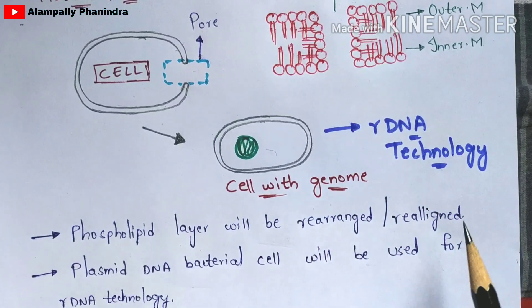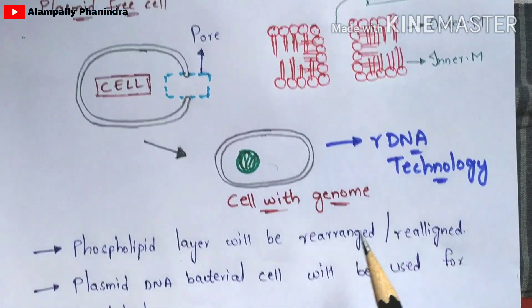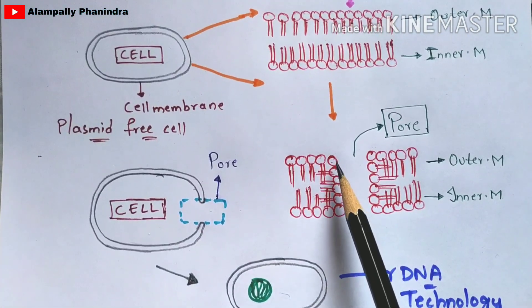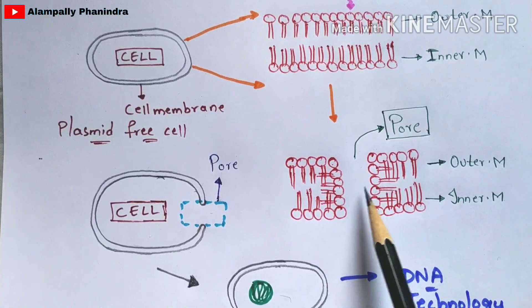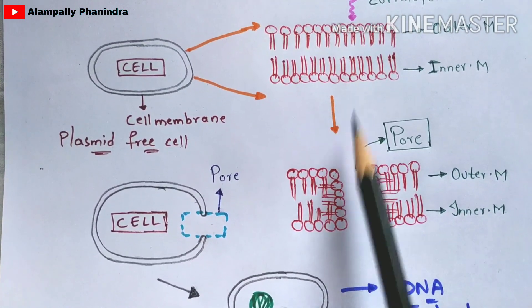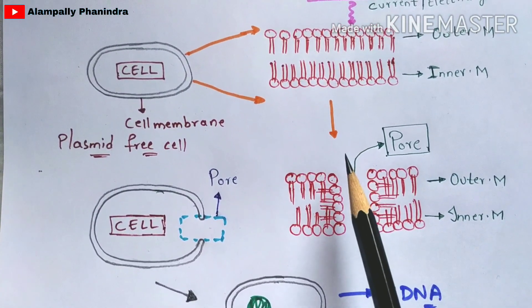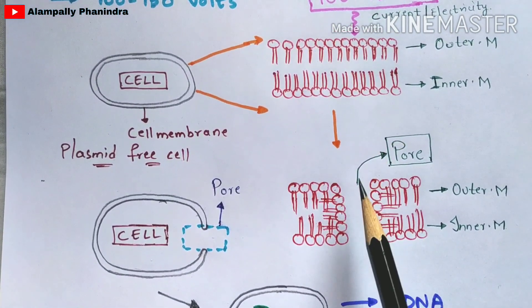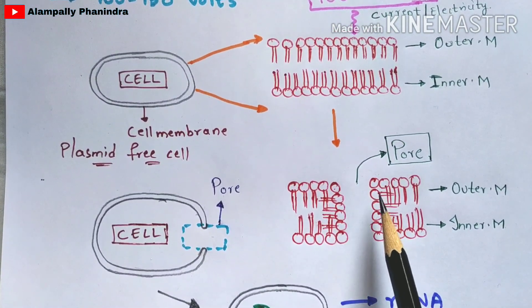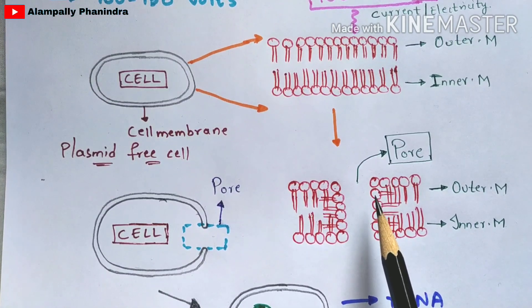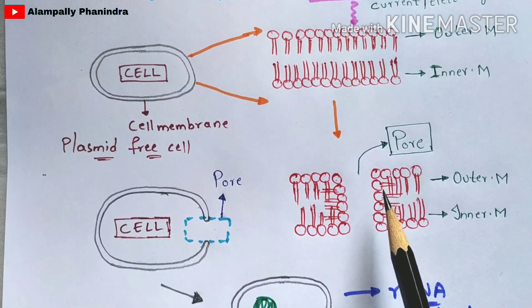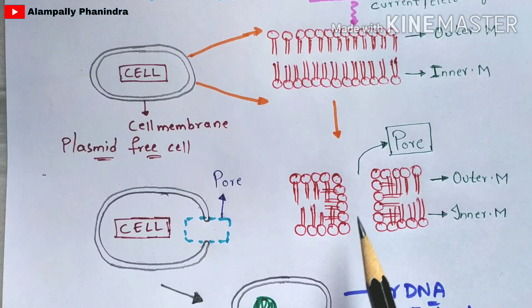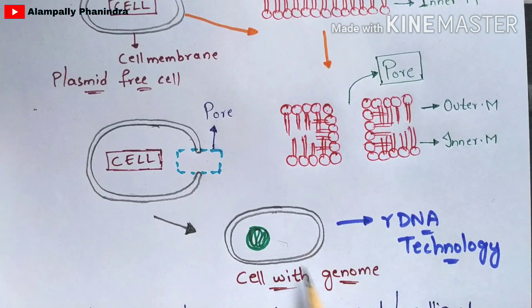The main important points to remember: the phospholipid bilayer will be rearranged, also called realigned, when electric current is applied and a pore is formed. You can see the quite visible difference between the normal and pore-formed structures. The second key point is that the plasmid DNA bacterial cell formed at the last process will be used for rDNA technology.